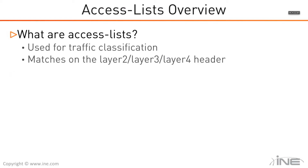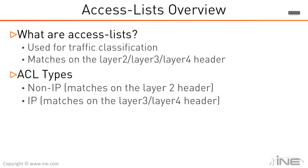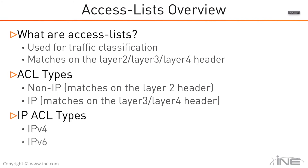Based on that, we have something called a non-IP access list, which is used whenever you match on the Layer 2 header — specifically for non-IP traffic based on the EtherType value of IPv4 or IPv6. Then we have the regular IP access list, which is used whenever you want to match on the Layer 3 and/or Layer 4 header, covering both IPv4 and IPv6 implementations.